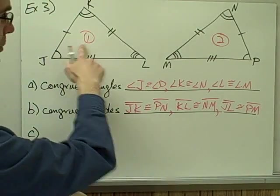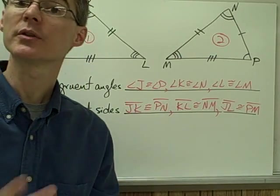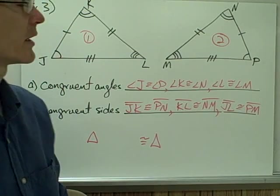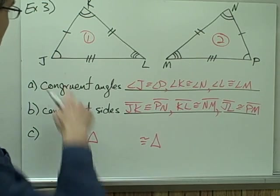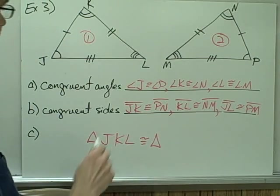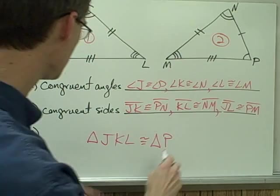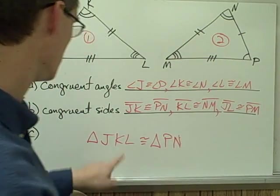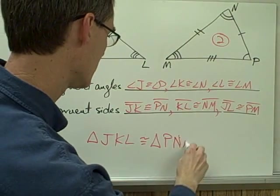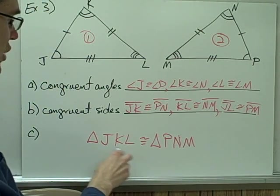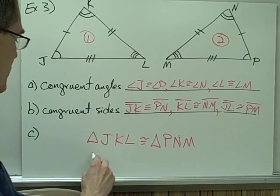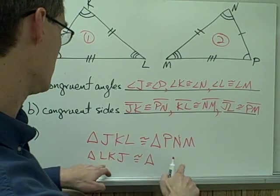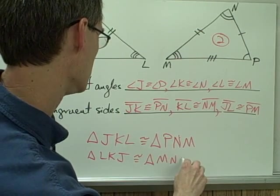Now once again I have all three angles of triangle number one congruent to all three angles of triangle number two, and all three sides congruent, so these two triangles are congruent. Triangle JKL is congruent to — J and P are congruent so I need P first, K is congruent to N so N is in the middle, and angle L is congruent to angle M so M is last — triangle PNM.